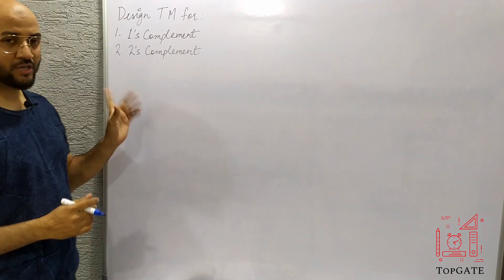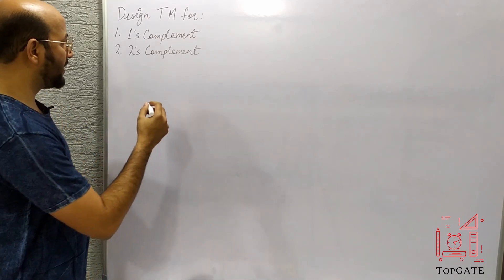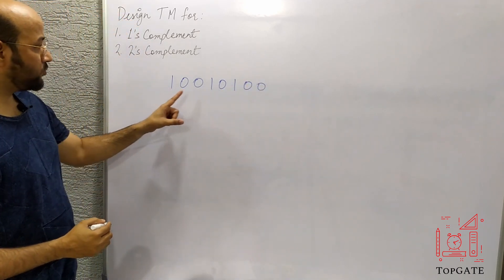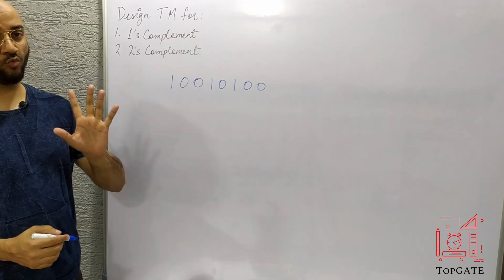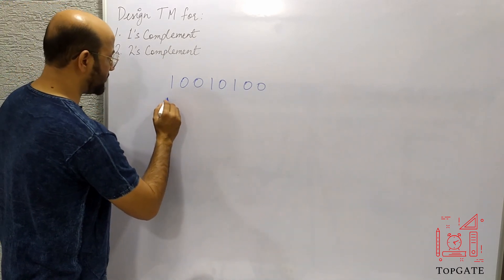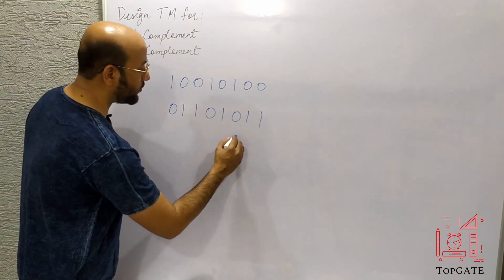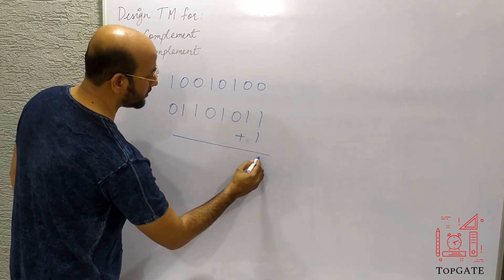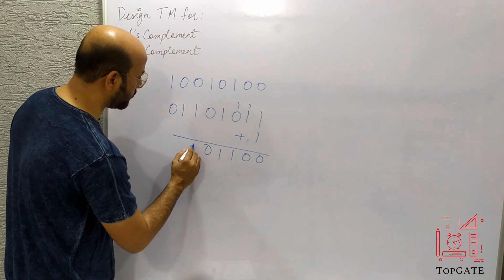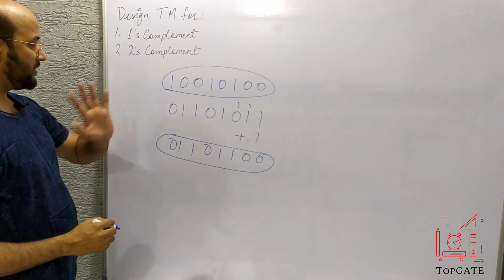Now let's find the twos complement. Take input string 1 0 0 1 0 1 0 0. The twos complement equals ones complement plus one. The ones complement is 0 1 1 0 1 0 1 1. Adding one: 1+1=0 carry 1, 1+1=0 carry 1, 1+0=1, and so on, giving the twos complement output.